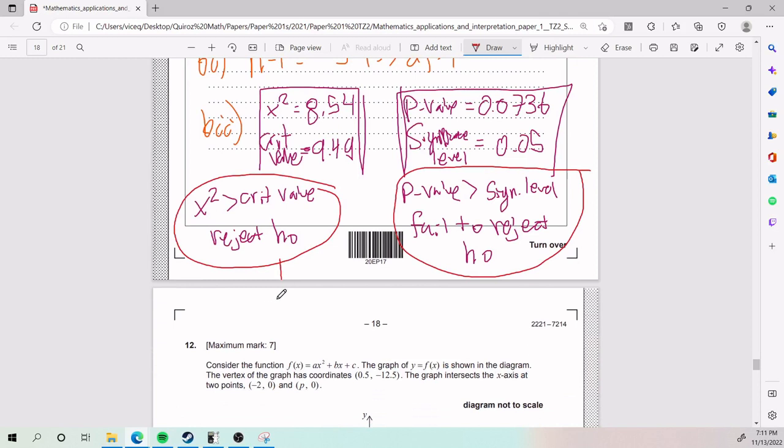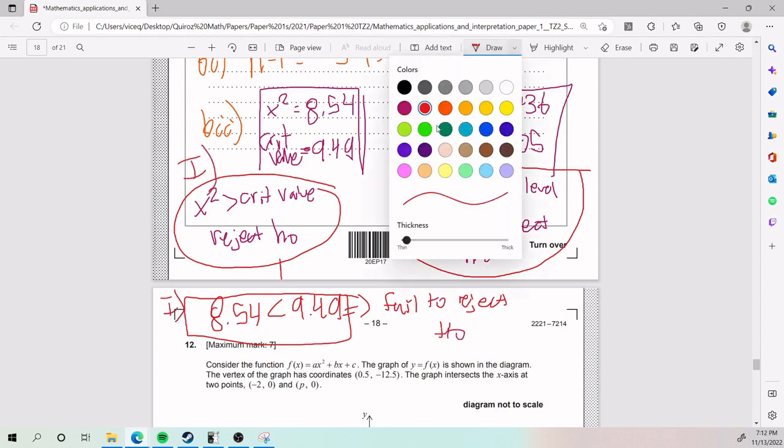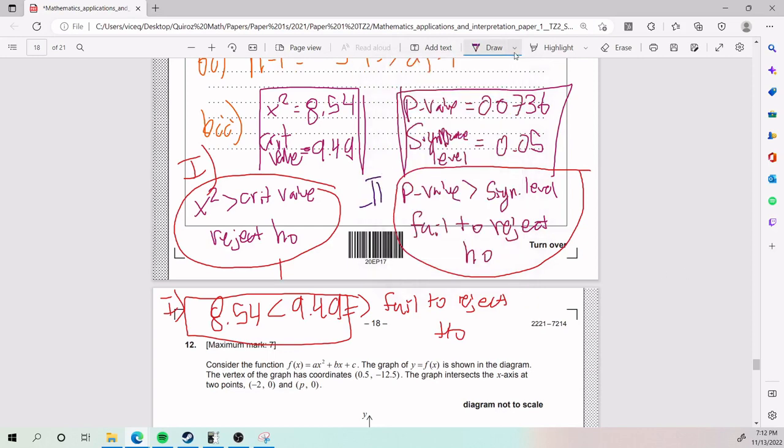With the first case, I'm going to compare chi-squared to critical value. We have 8.54 is actually less than 9.49. So does this look like that? No, it's actually the opposite. And so in this case, our conclusion is going to be fail to reject H0. That is with the first example here in orange. If I go with the second example, our p-value we said was 0.0736. And this p-value is greater than the significance level, which is 0.05. And so here, again, does it look like that? It actually does. And so our conclusion is fail to reject H0.